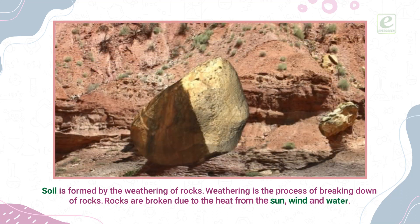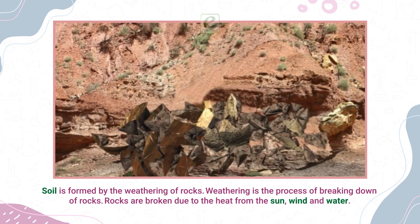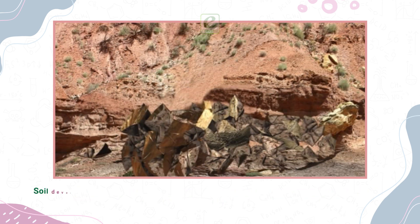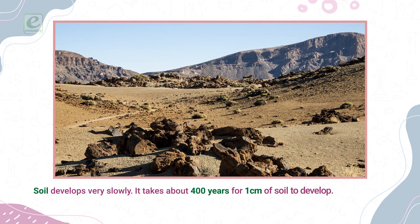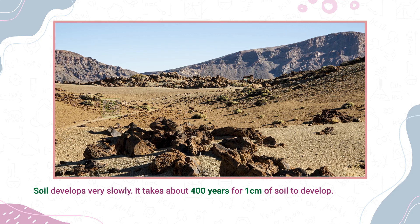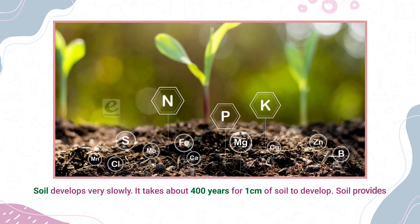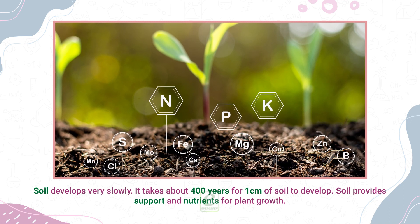Rocks are broken down by the heat from the sun, wind, and water. Soil develops very slowly. It takes about 400 years for 1 cm of soil to develop. Soil provides support and nutrients for plant growth.